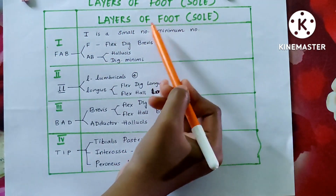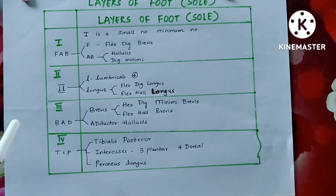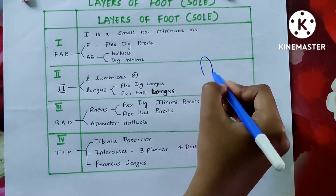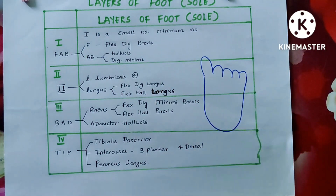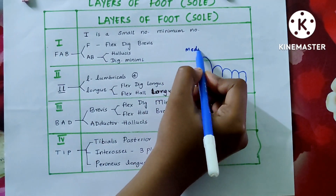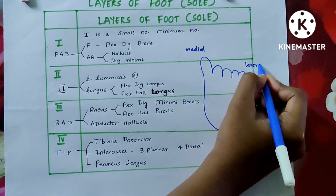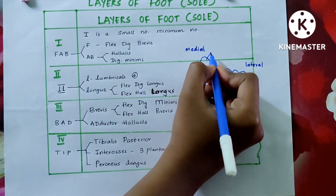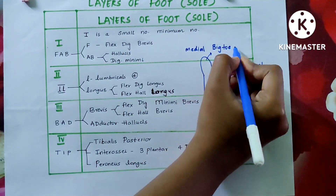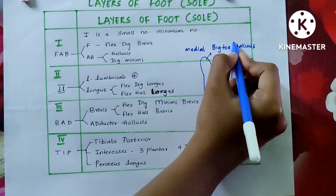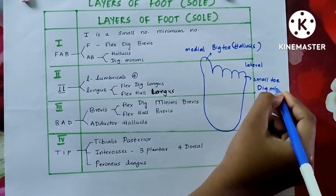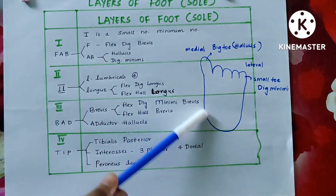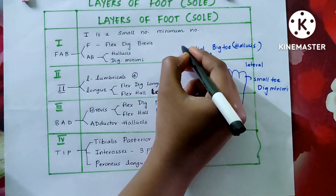Today let us discuss the layers of the foot sole. There are four layers in the sole of the foot. To understand all the layers clearly, let us draw a schematic diagram. The big toe side is the medial side and the little toe side is the lateral side. The big toe is otherwise called hallucis, and the little toe is otherwise called digiti minimi — digiti meaning finger and minimi meaning small. Digiti minimi is towards the lateral side and hallucis is towards the medial side. Understanding this helps you remember the muscle names and nerve supply easily.